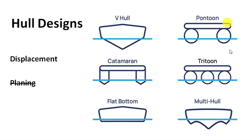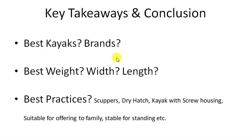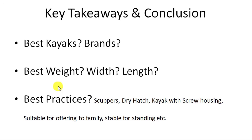Key takeaways and conclusions. Best kayak brands — it's all subjective. I like Old Towns, I like Crescents for the top deck, and generally I like pontoons and catamarans. A catamaran example would be the Perception Outlaw. For best weight, width, and length: I currently have a 44-pound kayak, which is too light, and it's 30 inches wide, so I'm upgrading to a bigger kayak. I think over 50 pounds should be the minimum weight. For width, I go for anything above 32 inches, ideally 34. For length, anything above 10 feet.